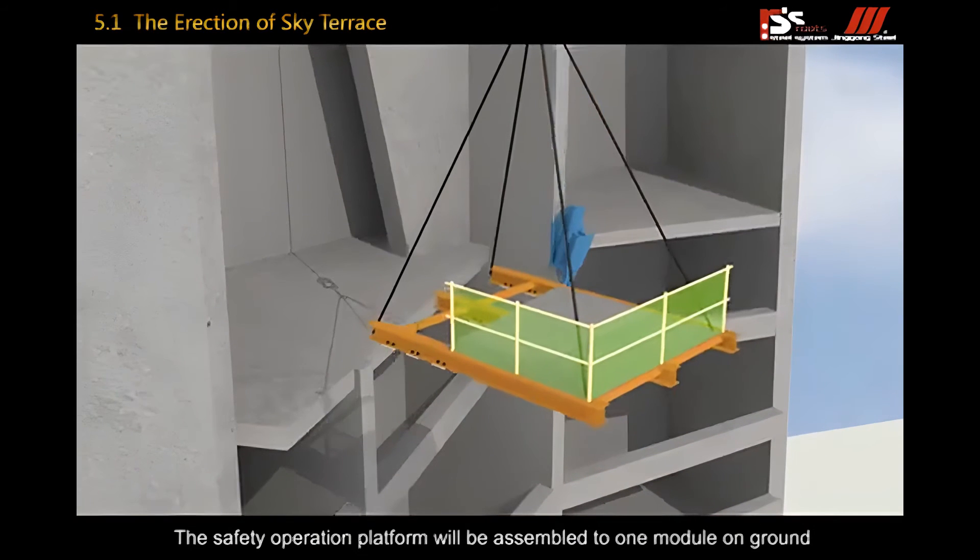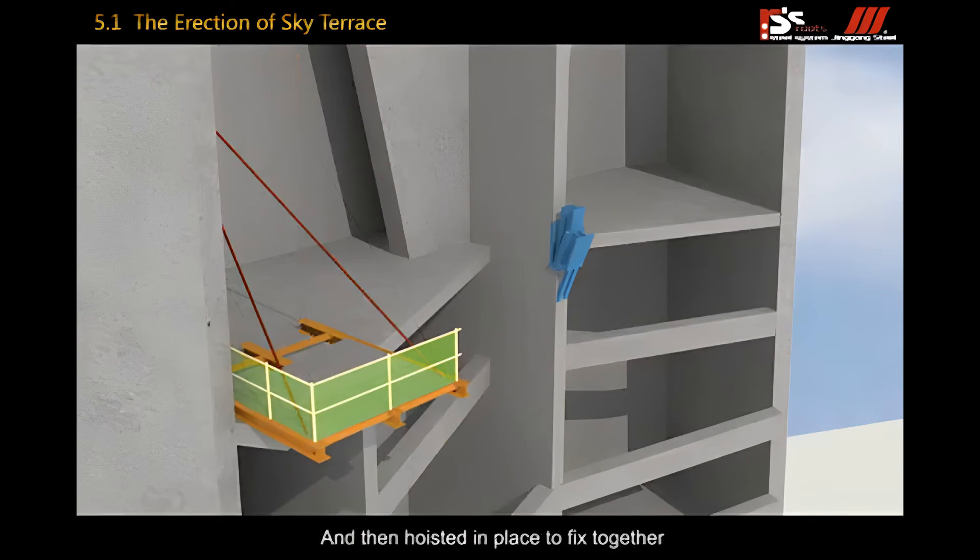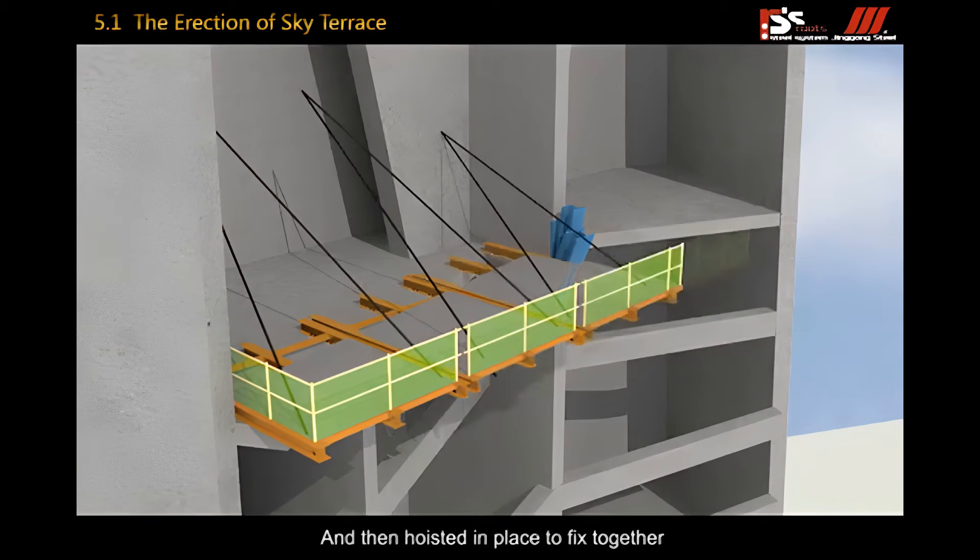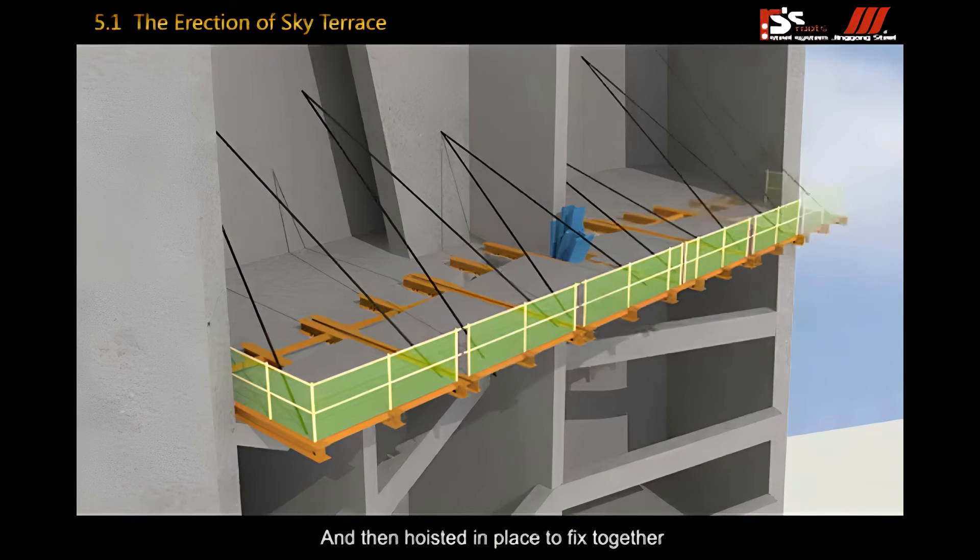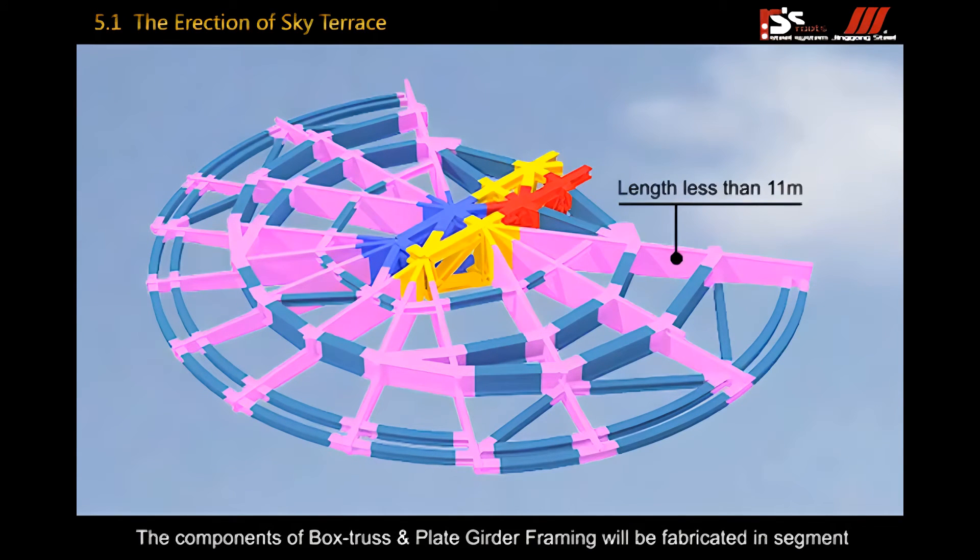The safety operation platform will be assembled to one module on ground and then hoisted in place to fix together. The components of box truss and plate girder framing will be fabricated in segments.